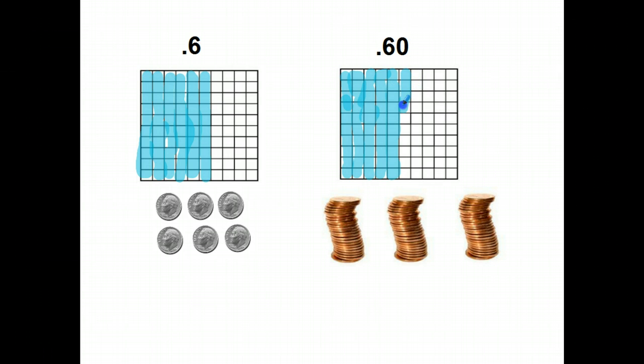Do the same thing over here with the sixty hundredths. I'll just finish this one up. You're going to see that we're dealing with the exact same quantity. And that is because when you put a zero on the back of a decimal number, you do not change its value. In other words, two dimes is the same as twenty pennies.